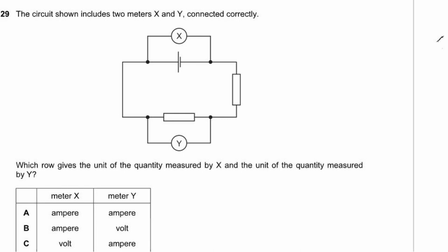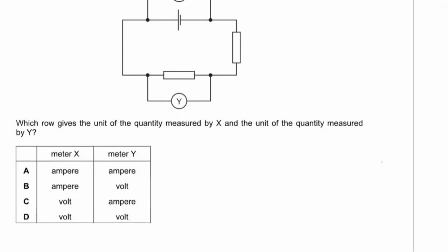Question 29. The circuit shows two meters X and Y connected across components — they are outside the circuit. Ammeters go inside the circuit; voltmeters stay outside. So both X and Y are voltmeters, measuring in volts. The answer is D.